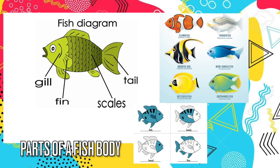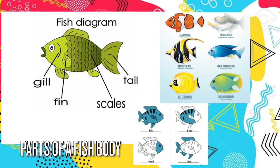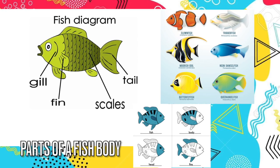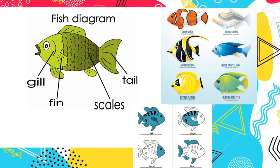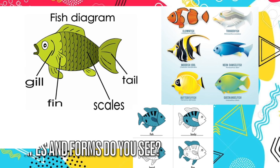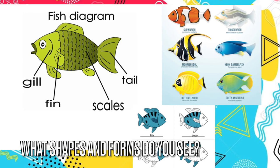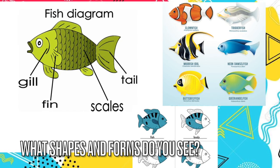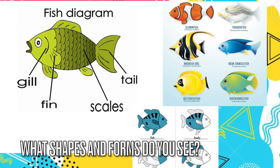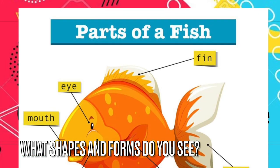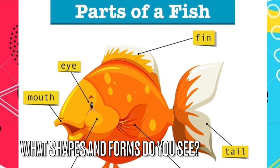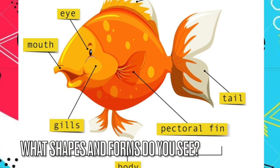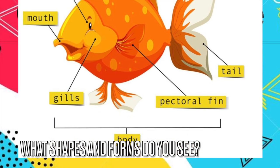Before we get started let's look at the anatomy or diagram of a fish. They have a body, a head, gills, fins, scales, and a tail. We are going to make each part of the fish using the model magic. Look closely at each part of the fish. What shapes and forms do you see? Think about how you are going to create each piece of the fish body using the model magic clay and what forms you will need to use.